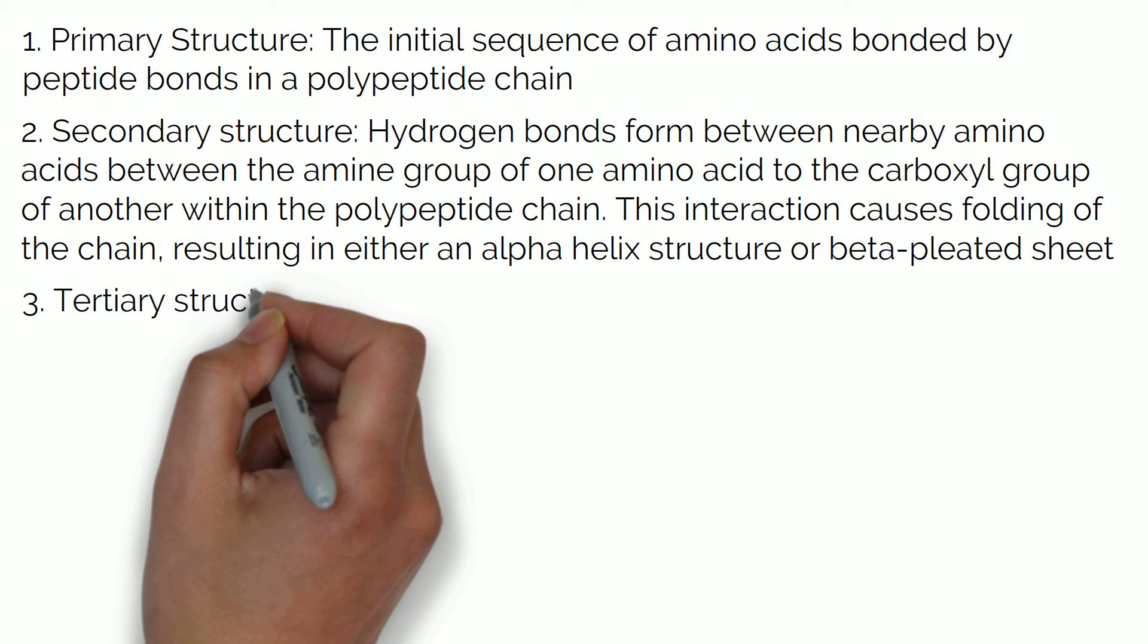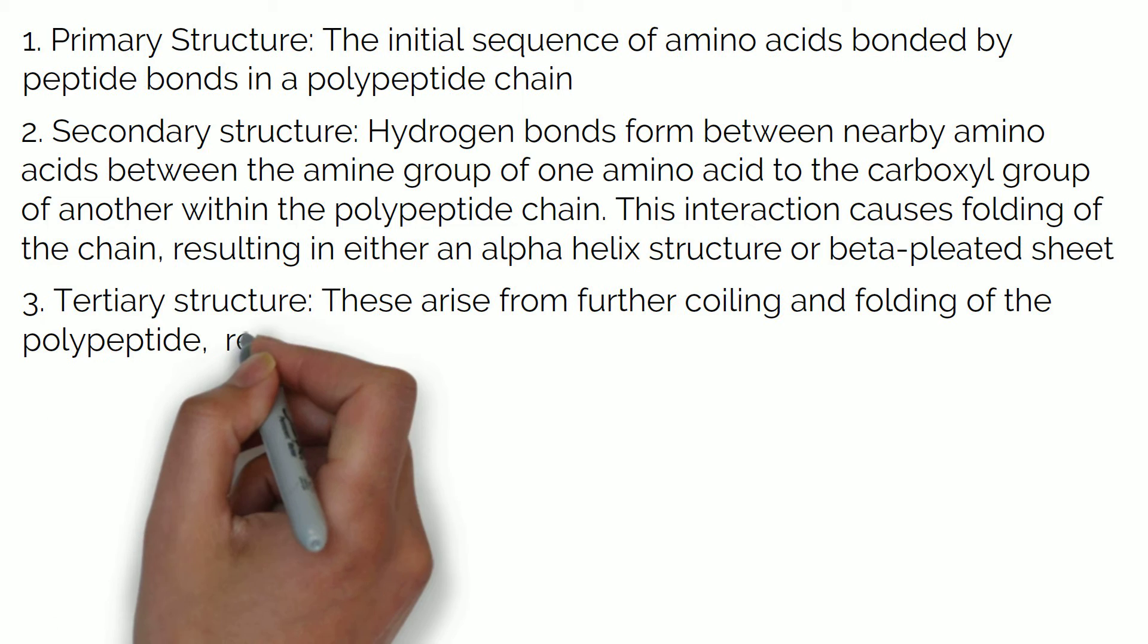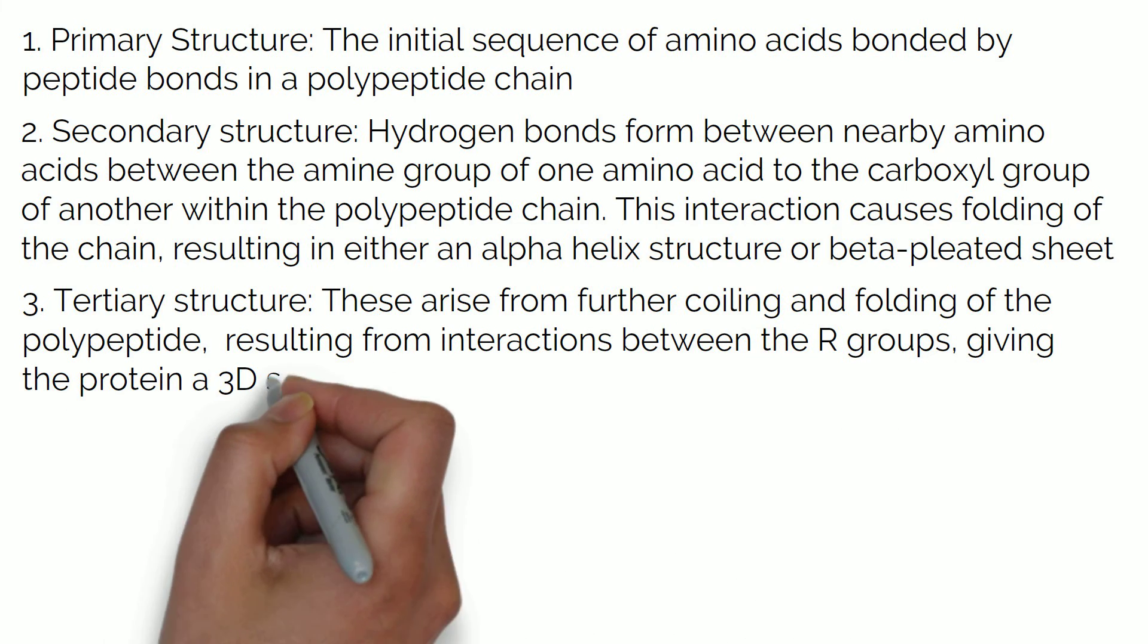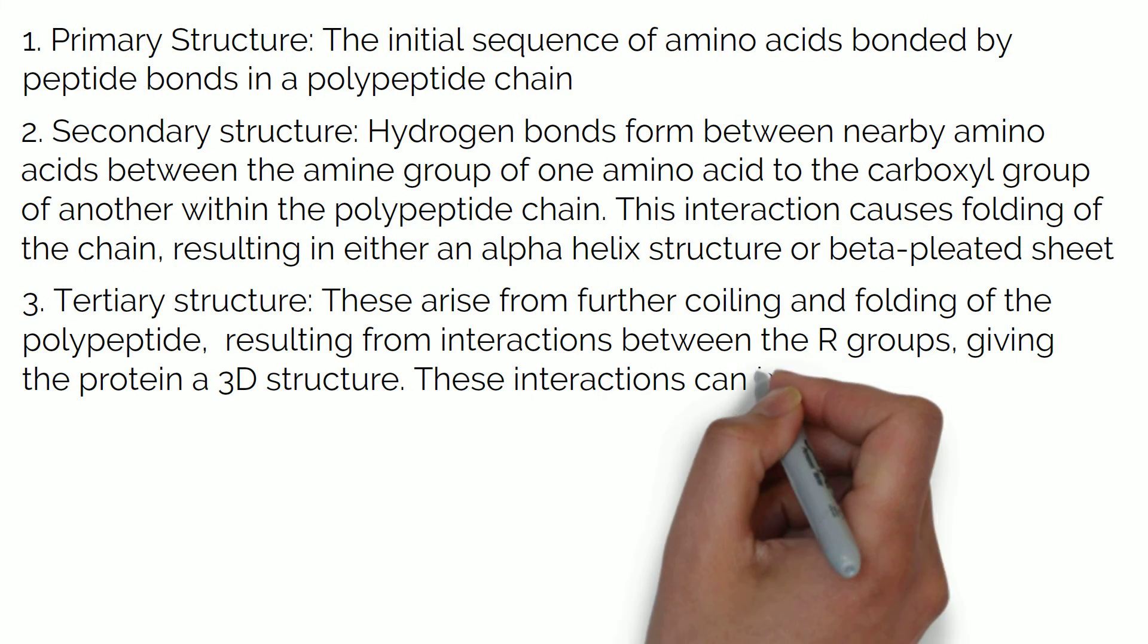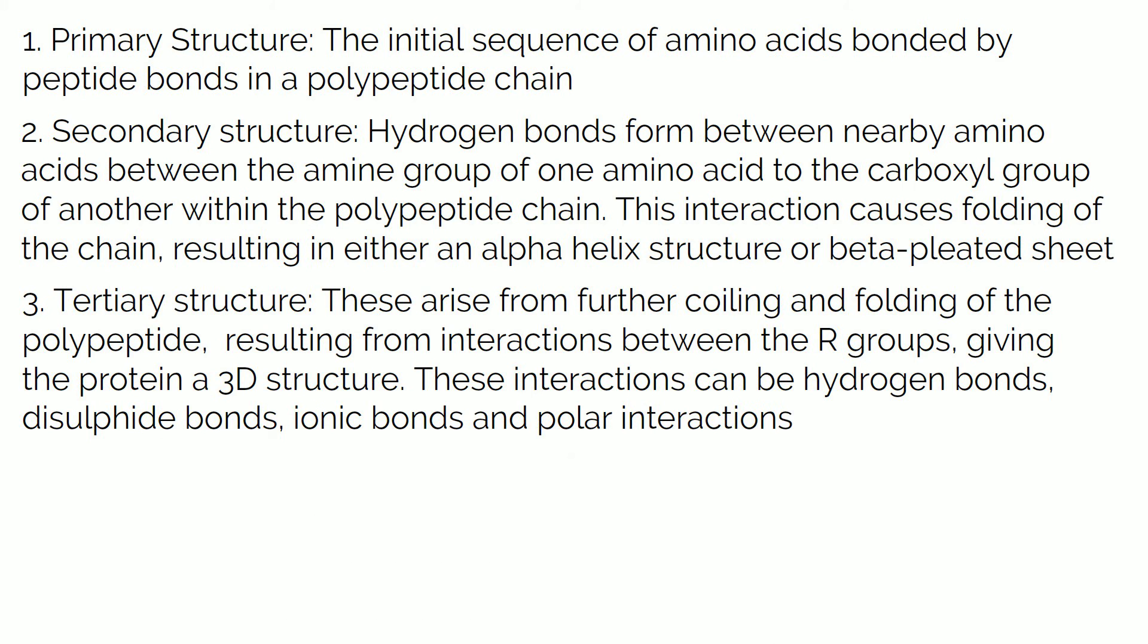The tertiary structure arises from further coiling and folding of the polypeptide, this time resulting from interactions between the variable R groups giving the protein a complex three-dimensional structure. The types of interactions between the R groups can be hydrogen bonds, disulfide bonds, ionic bonds and polar interactions, and this is the final protein structure of proteins consisting of a single polypeptide chain.